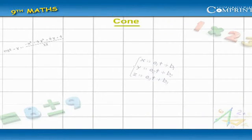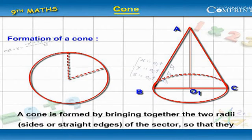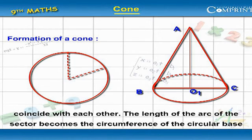Cone. Formation of a Cone. A cone is formed by bringing together two radius sides or straight edges of the sector so that they coincide with each other.